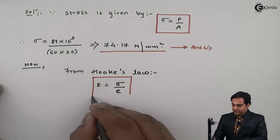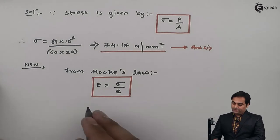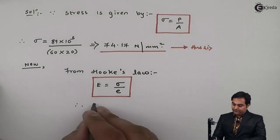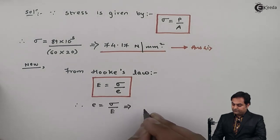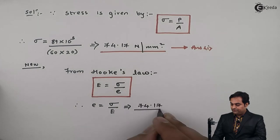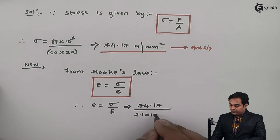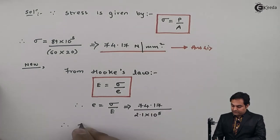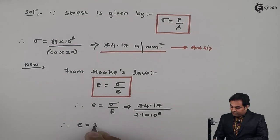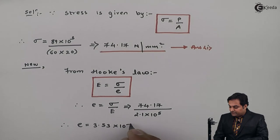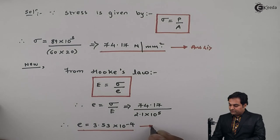I'll highlight this formula because we are using it from Hooke's law to calculate strain. Strain = stress / Young's modulus = 74.17 divided by 2.1 × 10⁵. From this, the strain comes out to be 3.53 × 10⁻⁴. This is the second answer.